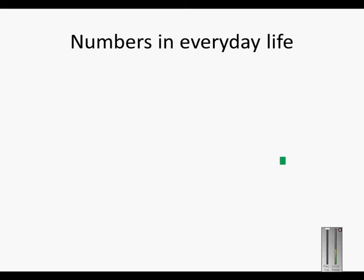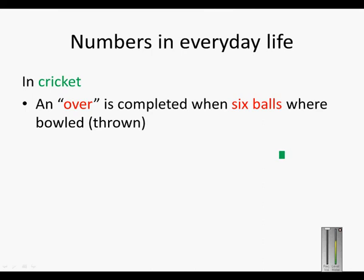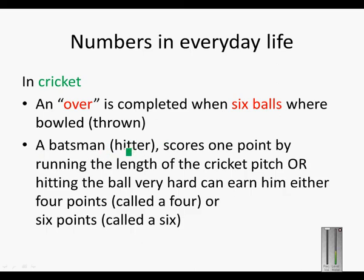Numbers in everyday life. In cricket, an over is completed when six balls are bowled. An over is one series, or one group, of six balls. The batsman scores one point by running the length of the cricket pitch. If the batsman hits the ball very hard, it can earn him four points, conveniently called a four, or six points, conveniently called a six.